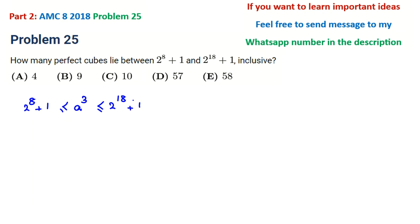For the first part, 2⁸ = 256, so 2⁸ + 1 = 257. We need a³ ≥ 257. Since 5³ = 125 and 6³ = 216, but 7³ = 7×49 = 343, we have a ≥ 7.